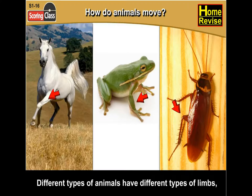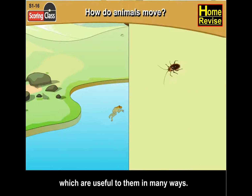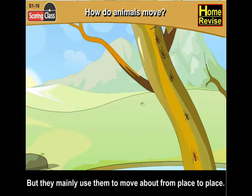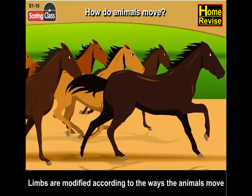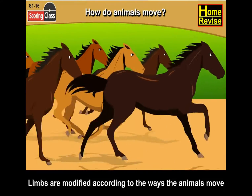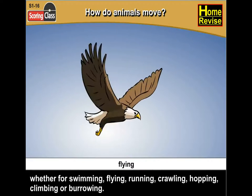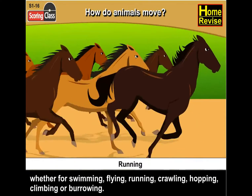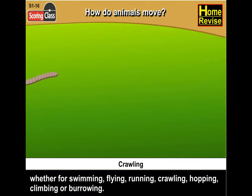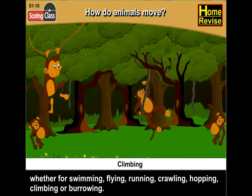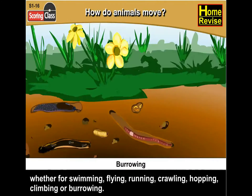Different types of animals have different types of limbs which are useful to them in many ways. But they mainly use them to move about from place to place. Limbs are modified according to the ways the animals move — whether for swimming, flying, running, crawling, hopping, climbing, or burrowing.